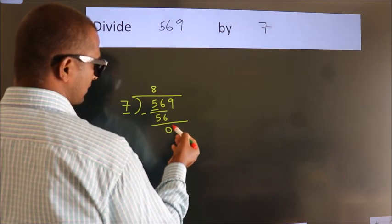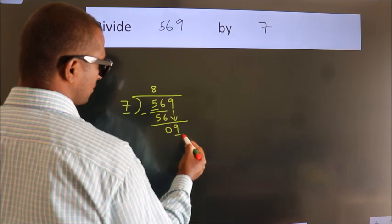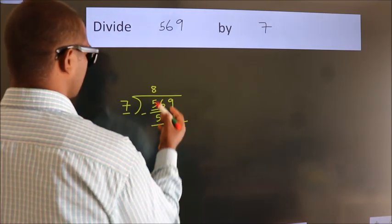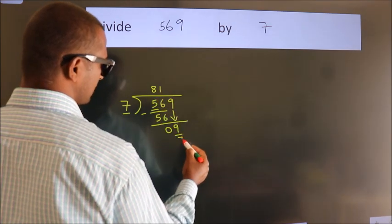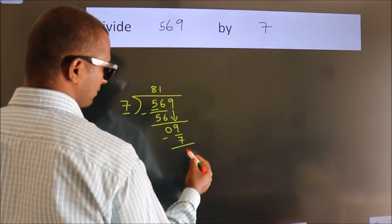After this, bring down the beside number. So 9 down. A number close to 9 in 7 table is 7 once 7. Now we subtract. We get 2.